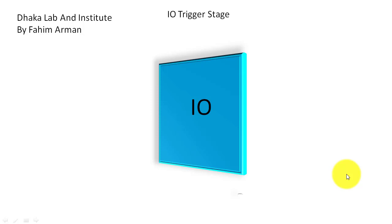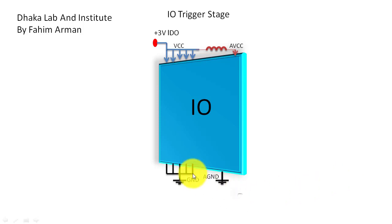For IO triggering, first there is a voltage — plus 3 volt LDO — that will enter into the IO chip, named BCC. This voltage also goes to another part named ABCC. For these two voltages there will be two grounds: the first ground is GND, and the other ground is AGND.